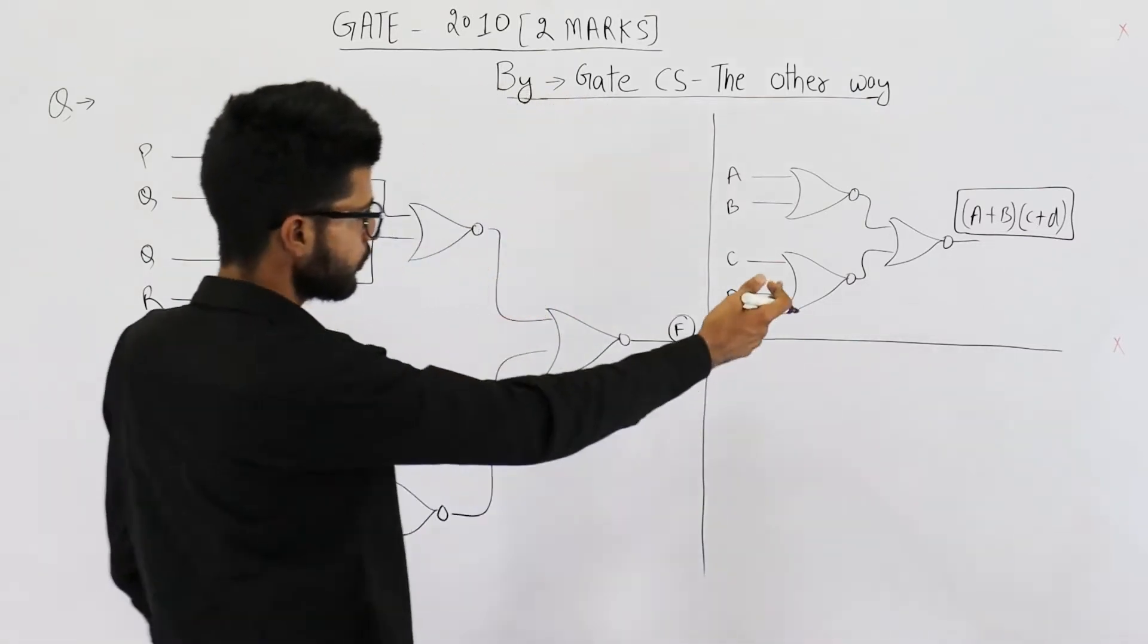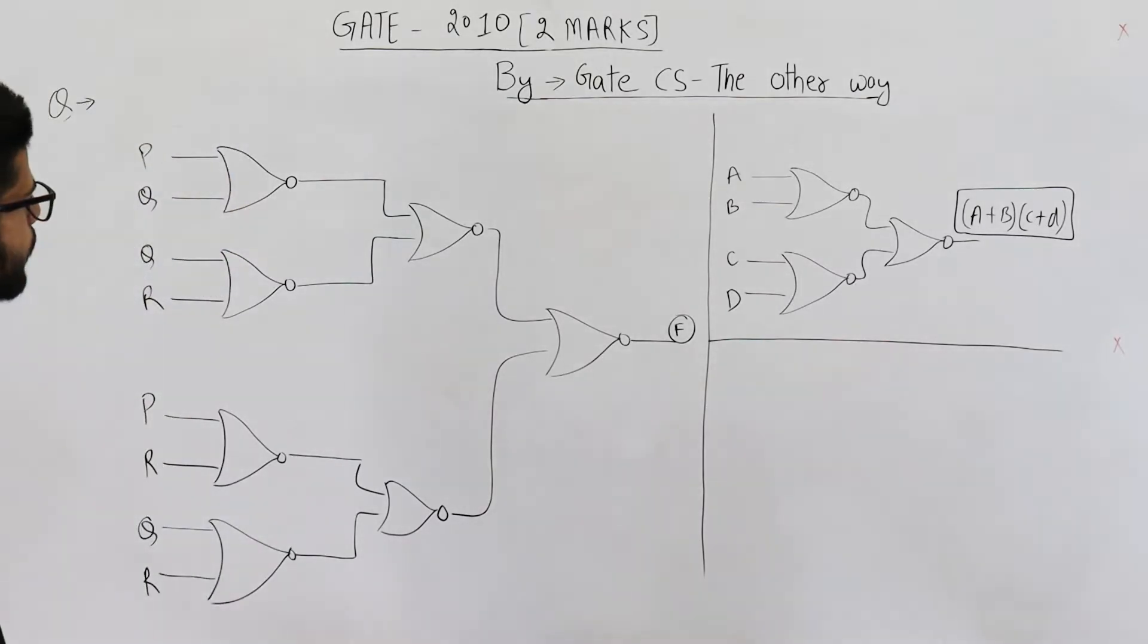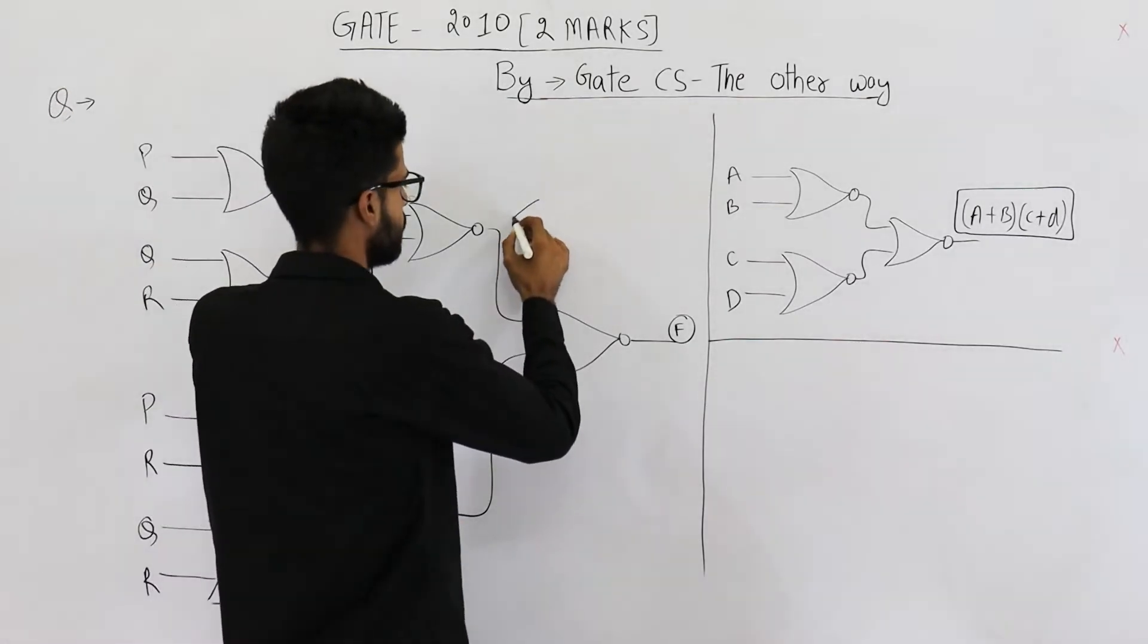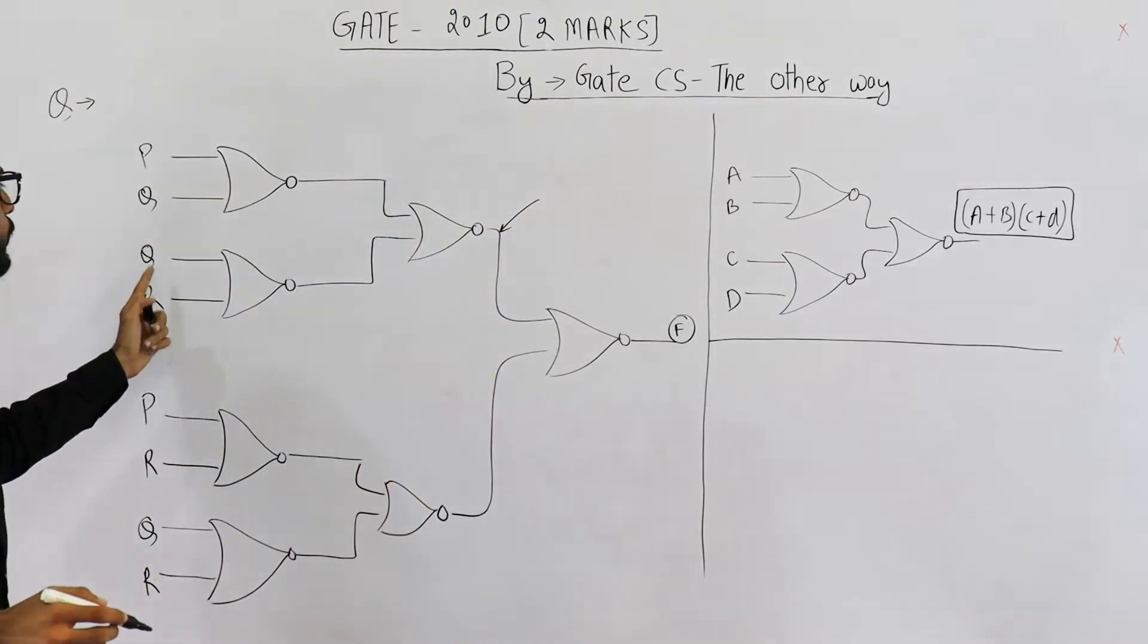So comparing this, you can analyze that output of this NOR gate will be P plus Q into Q plus R.